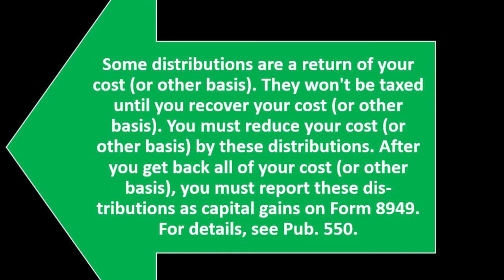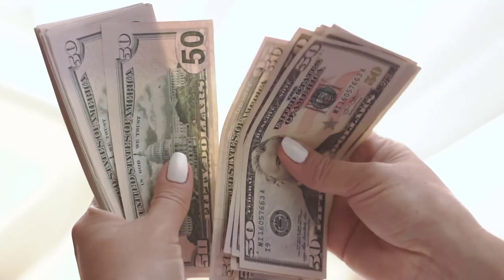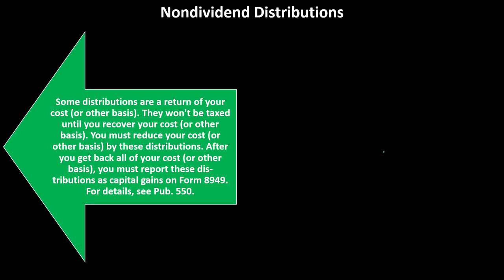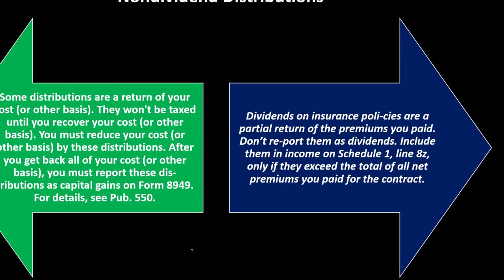Non-dividend distributions: some distributions are a return of your cost or other basis. They won't be taxed until you recover your cost or other basis. You must reduce your cost or other basis by these distributions. After you get back all your cost or other basis, you must report these distributions as capital gains on Form 8949. Additionally, dividends on insurance policies are a partial return of the premiums you paid - don't report them as dividends. Include them in income on Schedule 1, line 8z, only if they exceed the total of all net premiums you paid for the contract.